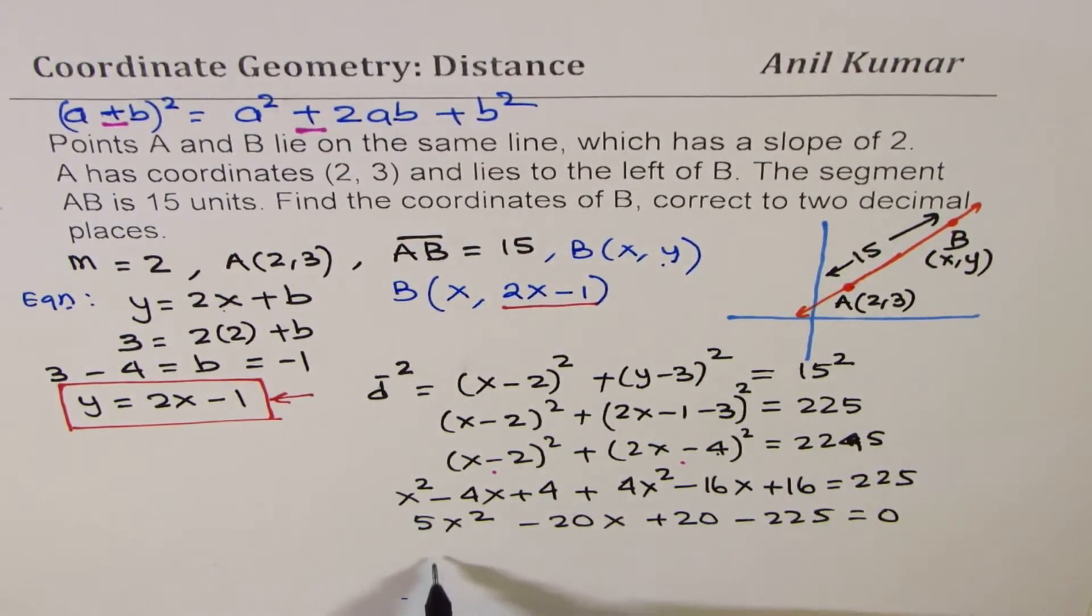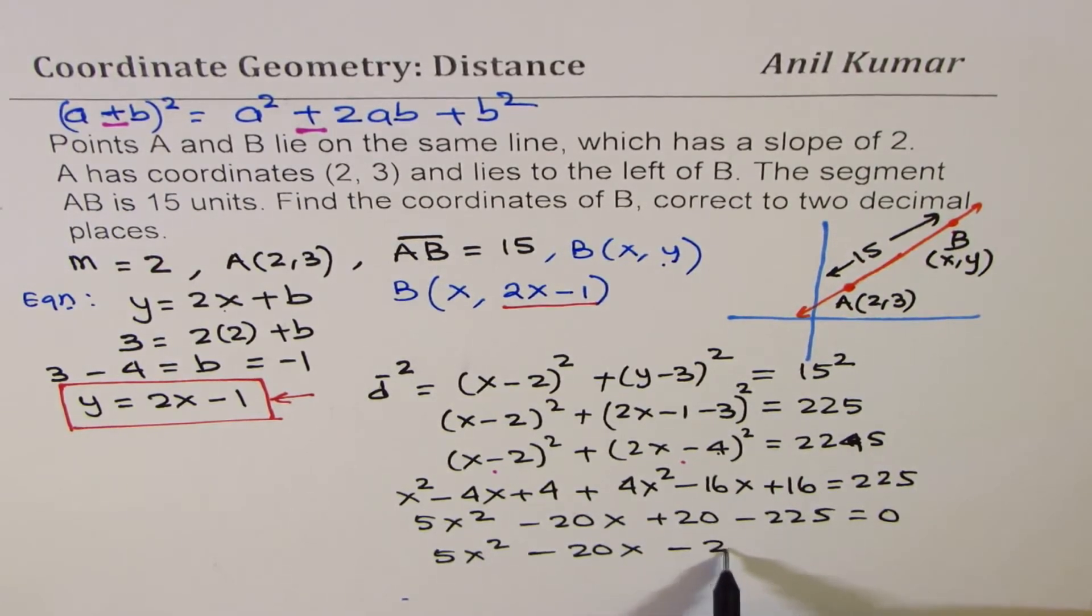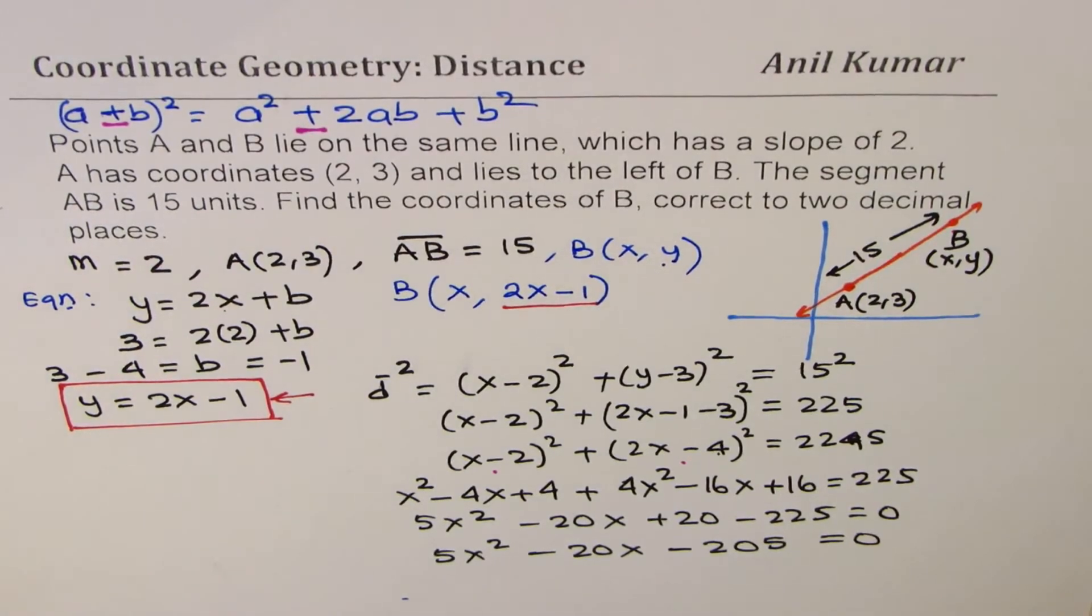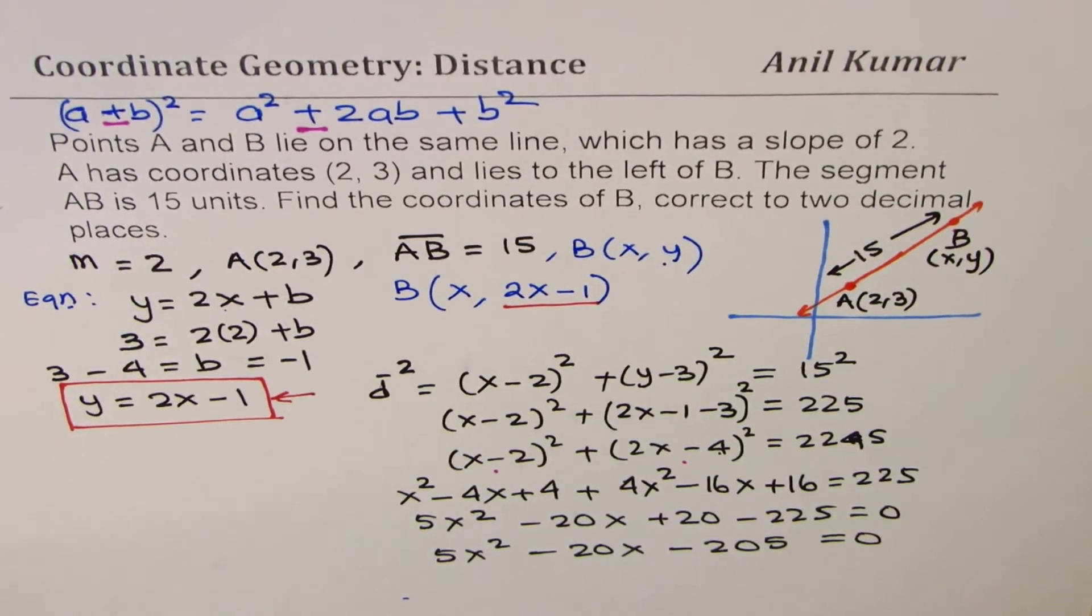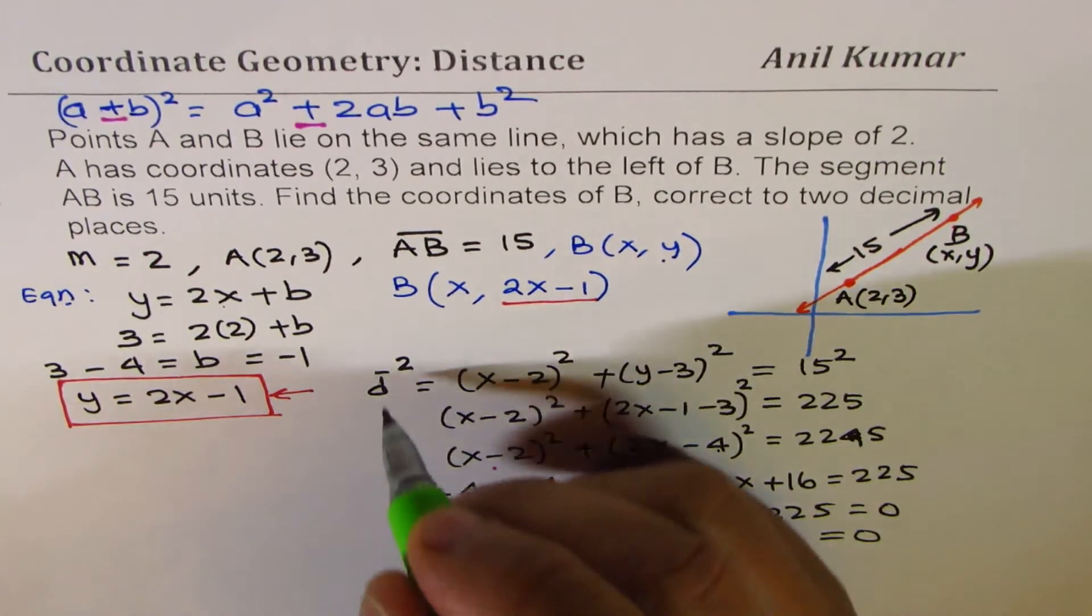We can combine these two. So, we get our equation as 5x² - 20x. That becomes -205 = 0. So, this is a quadratic equation. Perfect. So, you can use quadratic formula and solve for x, right?